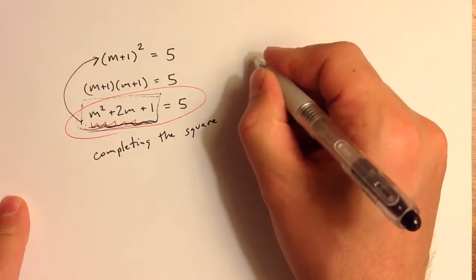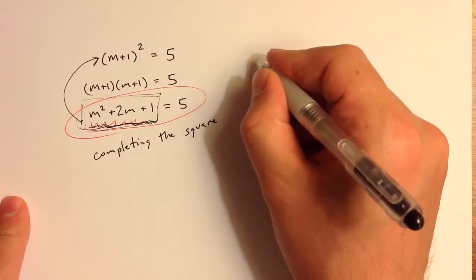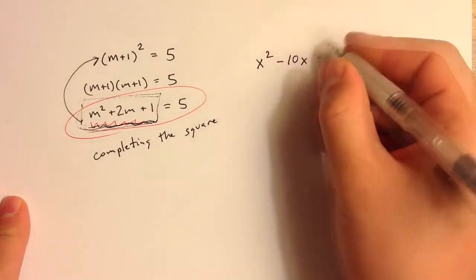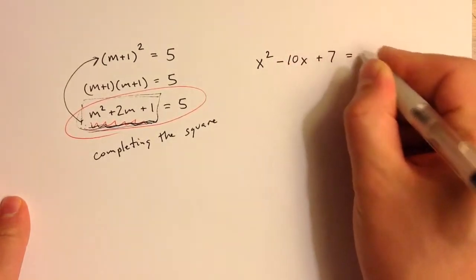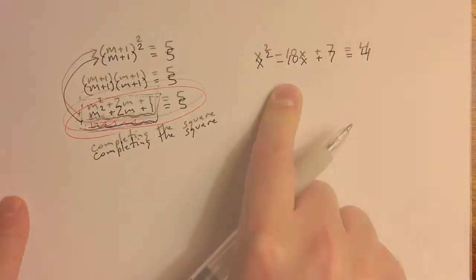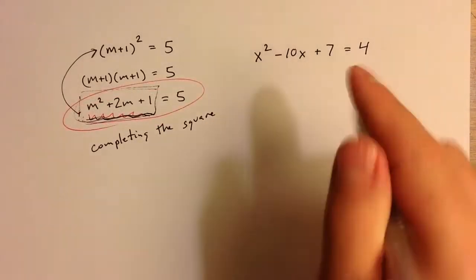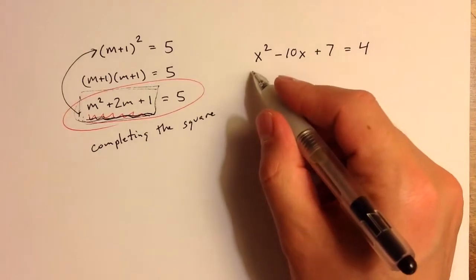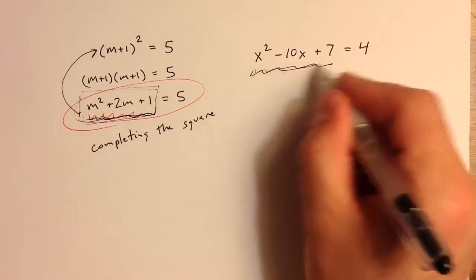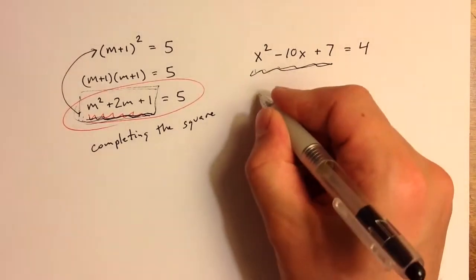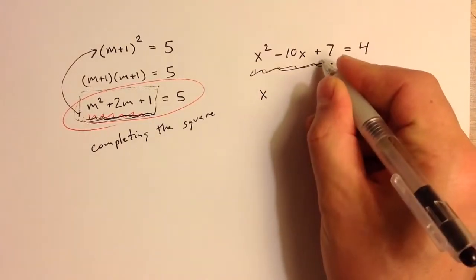Suppose I'm trying to solve the equation x squared minus 10x plus 7 equals 4. Well, this is not a perfect square trinomial. In fact, I don't even think this trinomial factors. But that's okay. What I'd like to do is create a perfect square trinomial. So I'm going to subtract 7 to the other side.